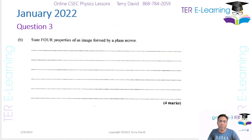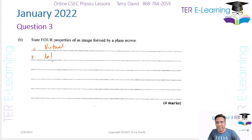The next part asks us to state four properties of an image formed in a plain mirror — as if you are looking in a mirror. The first property is that your image is a virtual image. The second property is that your image is laterally inverted.